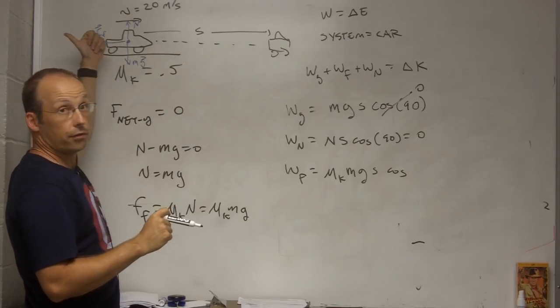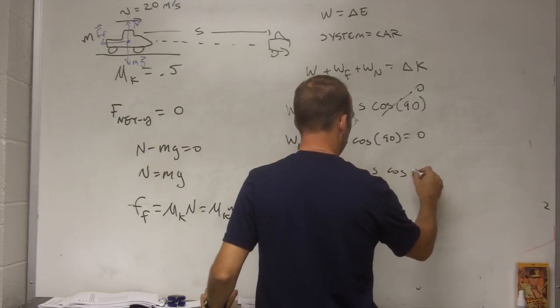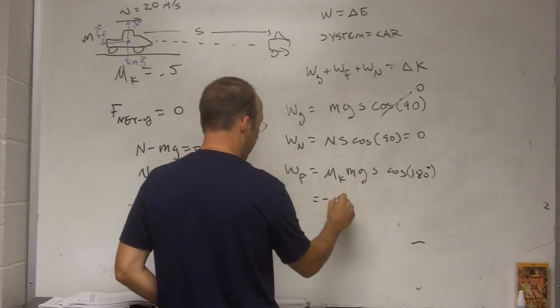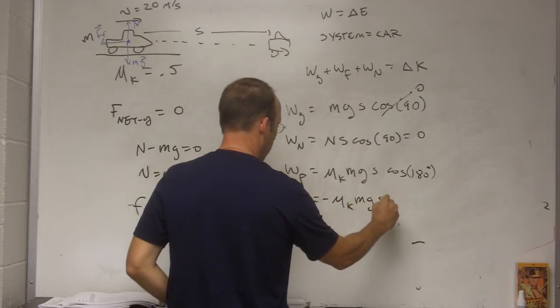f, it's really delta s, the vector, that way. And f is that way, the frictional force is that way, so the cosine, it's a cosine of 180 degrees, which is negative one. So, I get the work done by friction, it's negative mu k, mg, s.